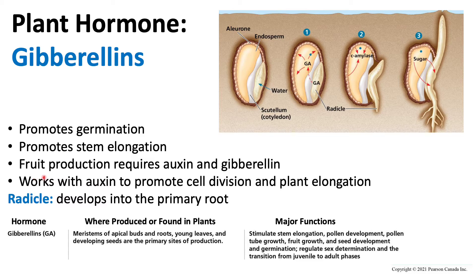Auxin and gibberellin, both being growth hormones, are required for fruit production because fruit production requires more cells to be produced. Gibberellins also work with auxin to promote cell division and plant elongation. Gibberellin promotes early germination and further plant growth alongside auxin, and auxin also requires cytokinin — the hormone that promotes cytokinesis, which is the splitting into two daughter cells.